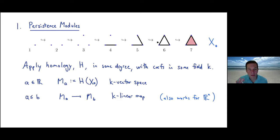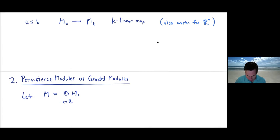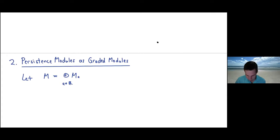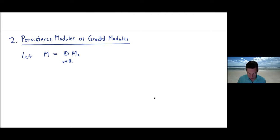Everything I'm going to talk about today can be done in the multi-parameter setting — and in fact our paper uses that setting and even greater generality. But for today's talk, everything will be indexed by the real numbers. Now I want to take a slightly unconventional view on persistence modules — the graded module point of view — which goes back to the very earliest papers.